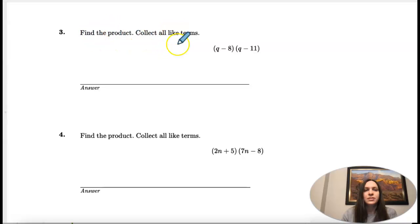Number three, we're finding the product. This time we're multiplying two binomials.